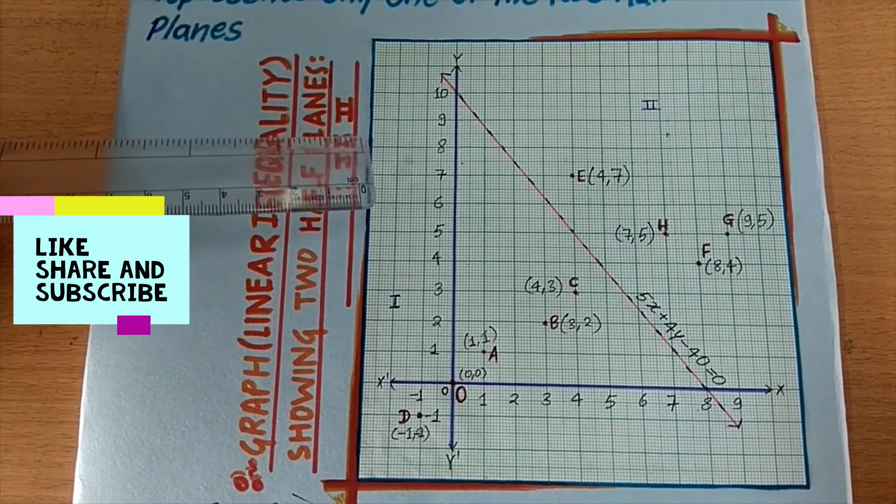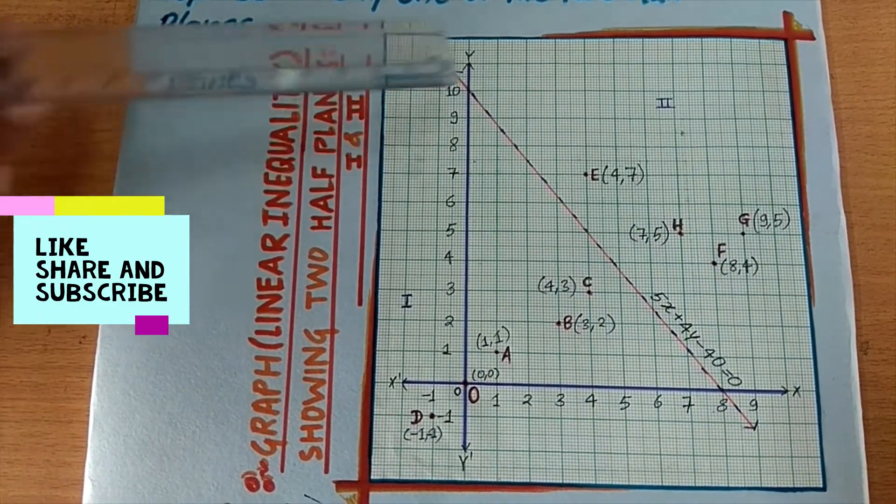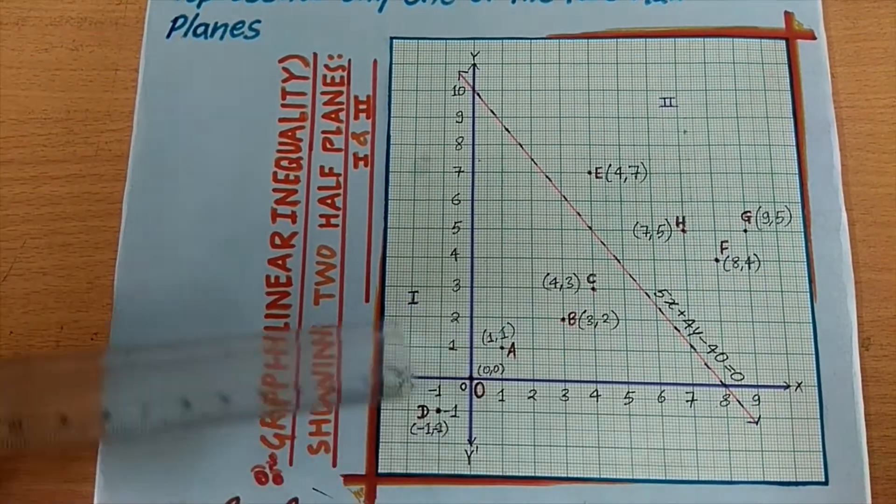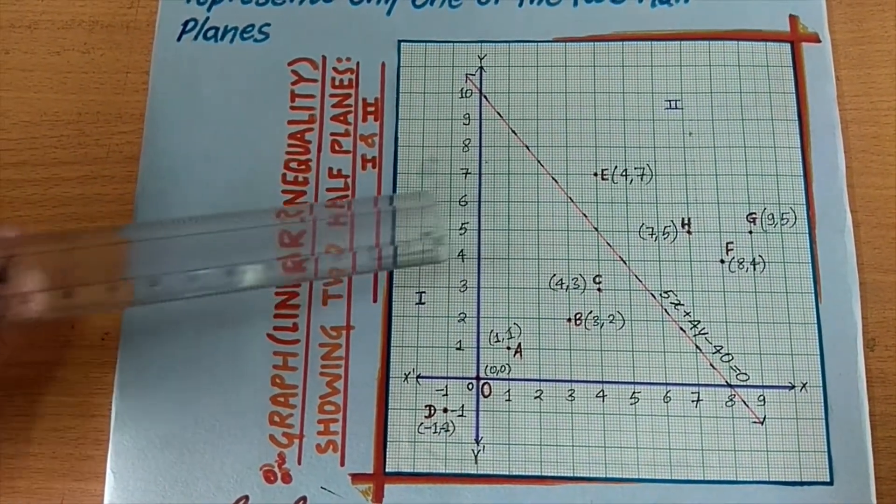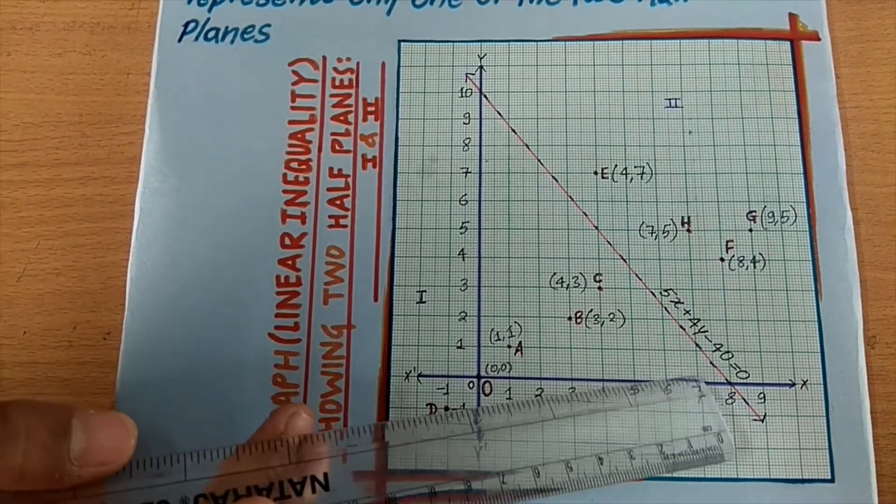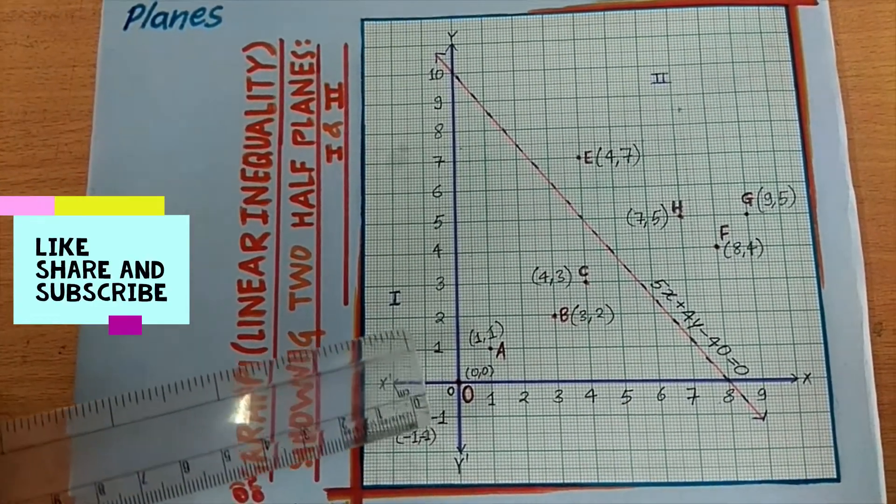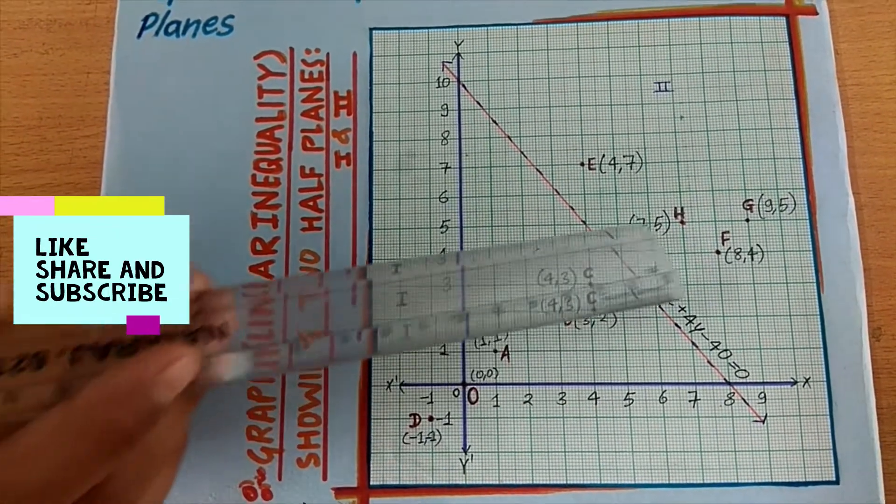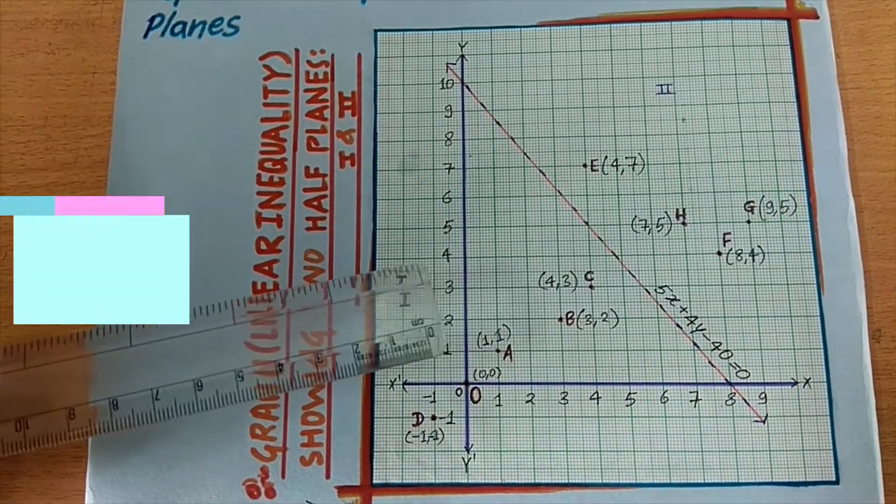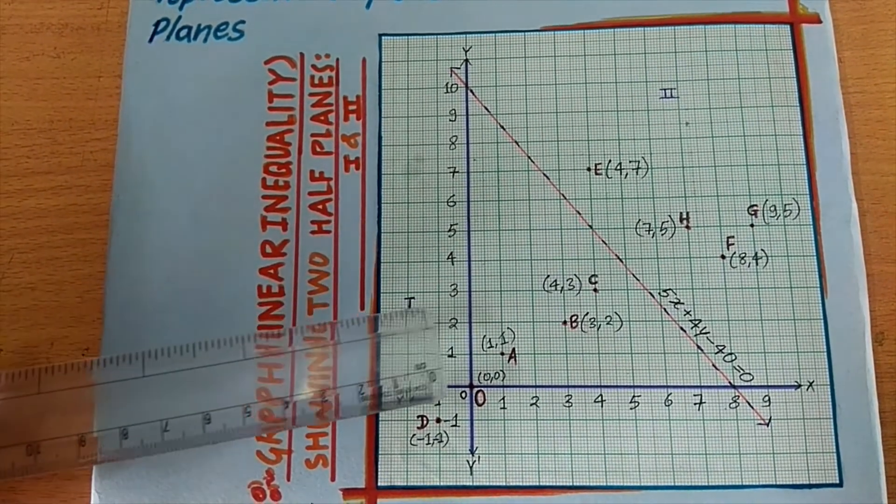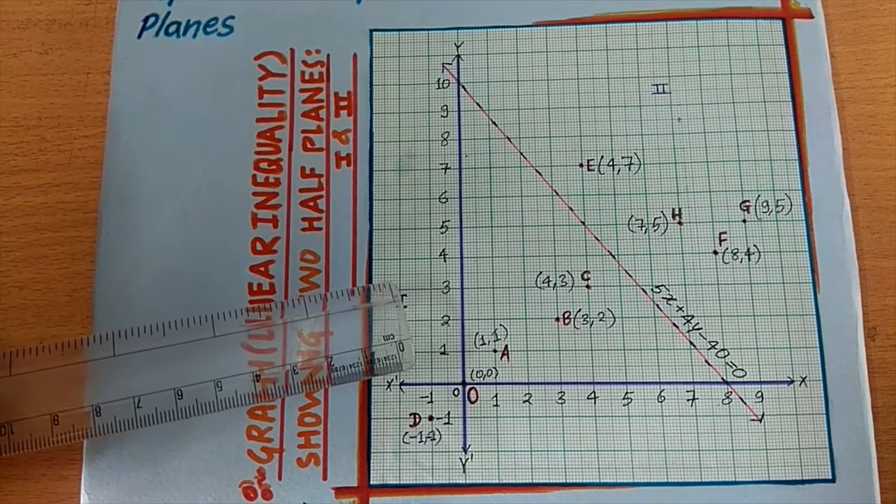To do so, we take our xy plane which is divided into two half planes, say 1 and 2, by the given inequality 5x plus 4y minus 40 less than 0. Then we take some random points from both of these planes. Let these points be A, B, C, D, O from half plane 1, and E, F, G, H from plane 2.